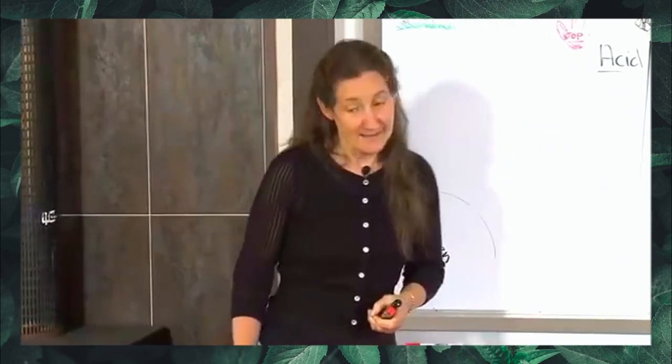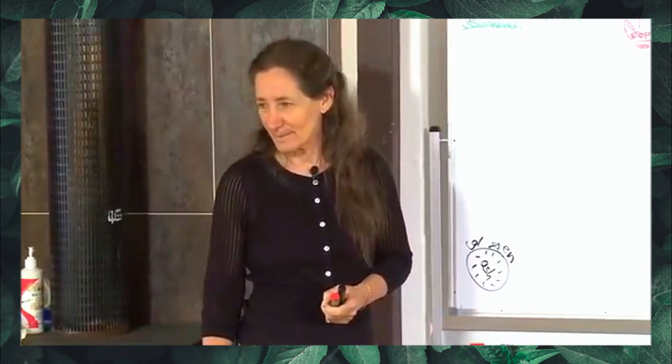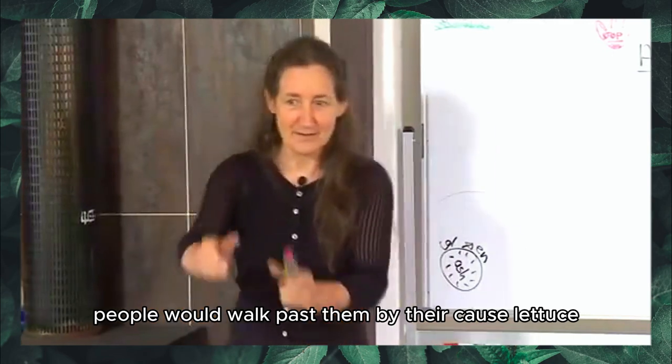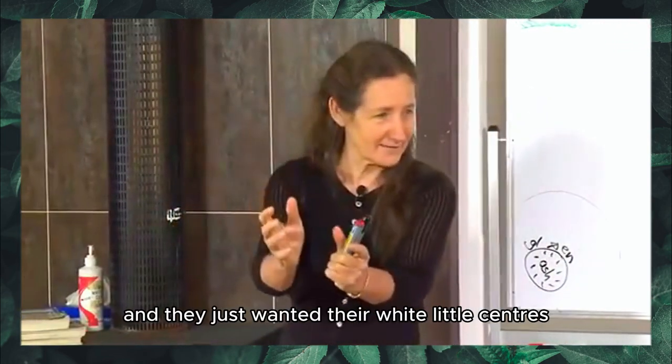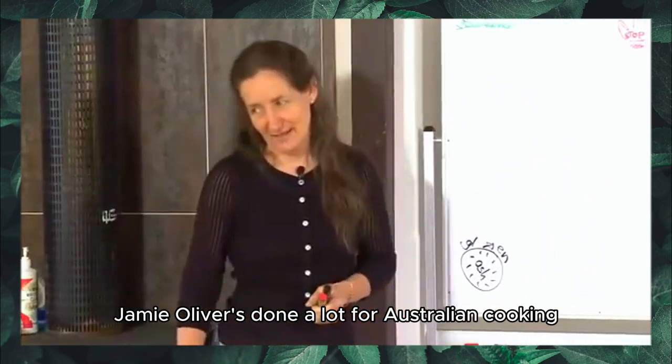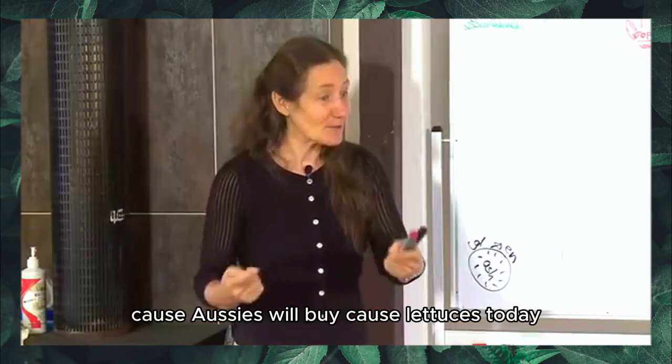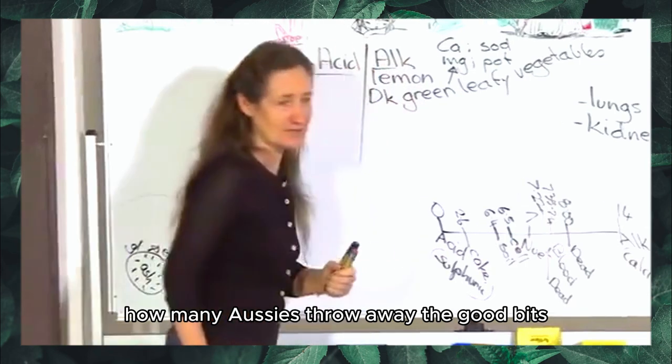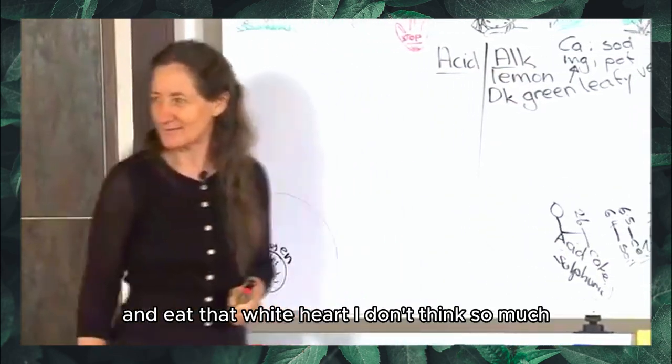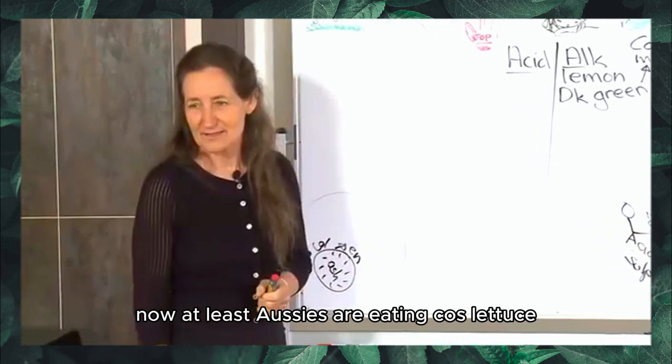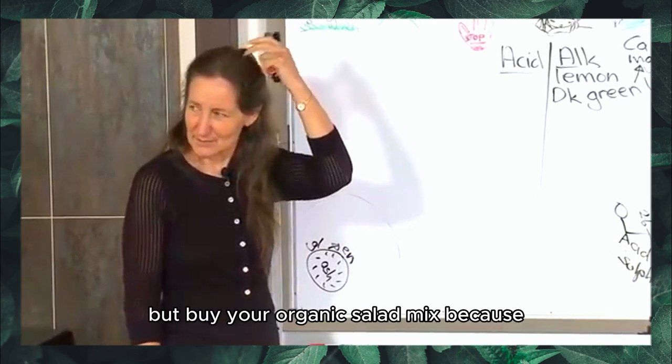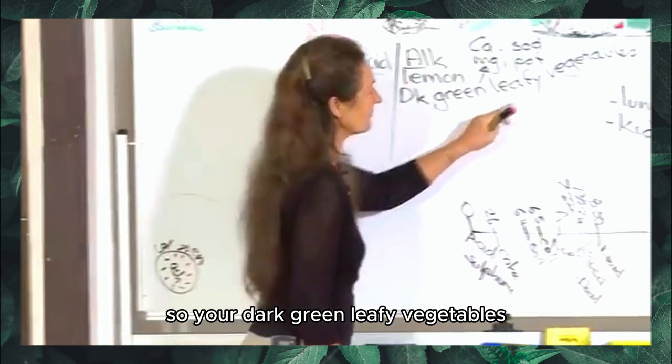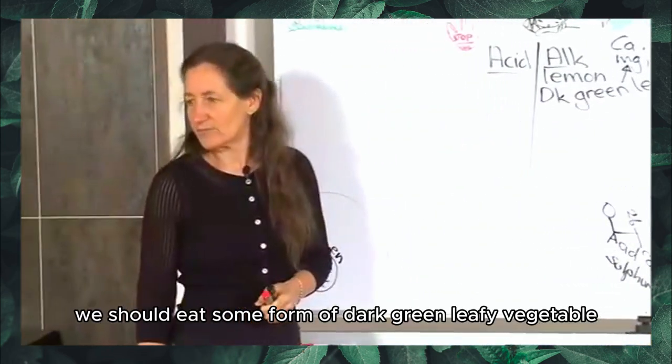So I went to the local fruit and veggie shop. I said, Andrew, I've got all these cos lettuce, I'll just give them to you. He said, thanks a lot, I'll try. But he said, I don't think anyone will buy them. He put them out the front of the shop at 80 cents a lettuce. People would walk past them and buy their cos lettuce where the lettuce leaves were looking a little sad and they just wanted their white little centers. Jamie Oliver's done a lot for Australian cooking hasn't he? Aussies will buy cos lettuces today.